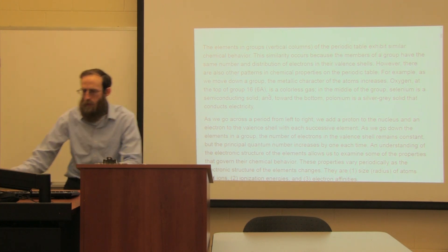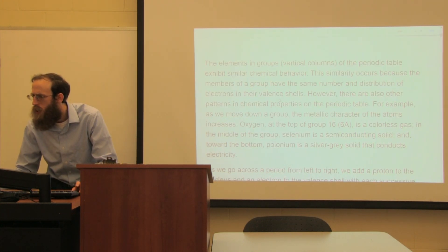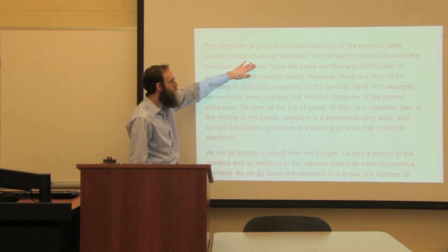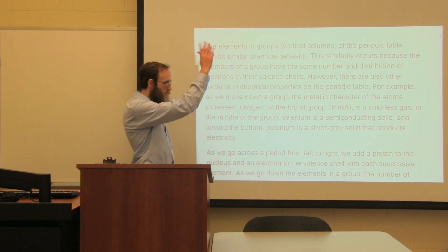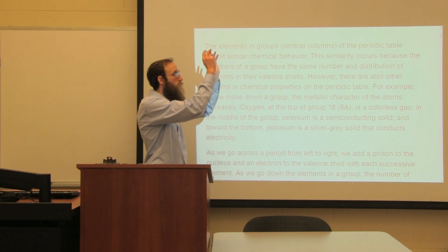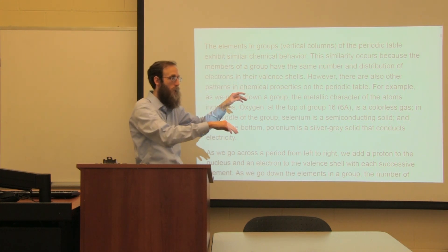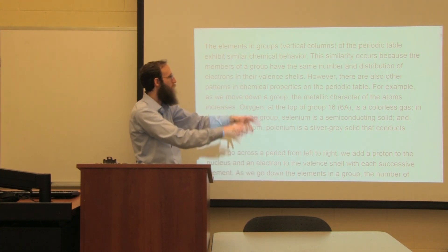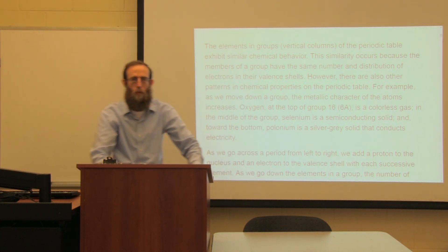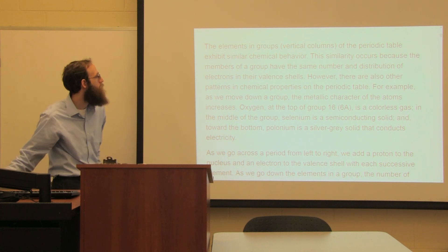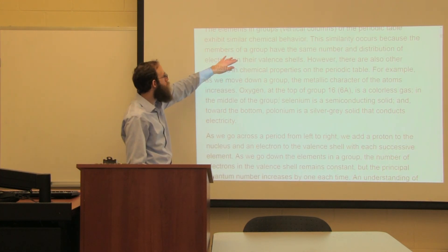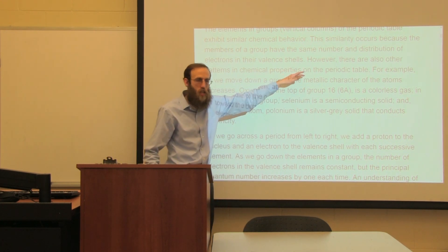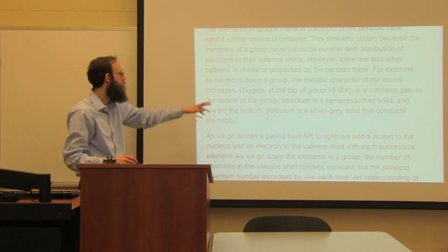Elements in the groups - those are the columns - have similar chemical behaviors. We've got the alkali metals, the alkaline earth metals, the noble gases, and the halides. These occur because the members of the group have the same number and distribution of electrons in their valence shell, in those outer shells.